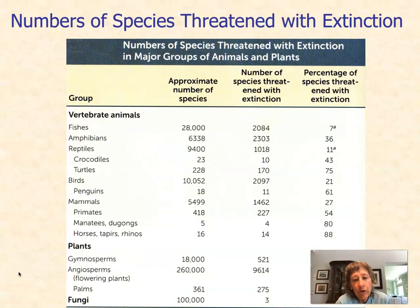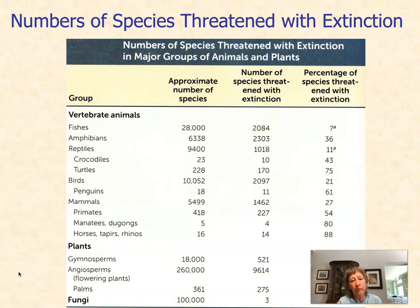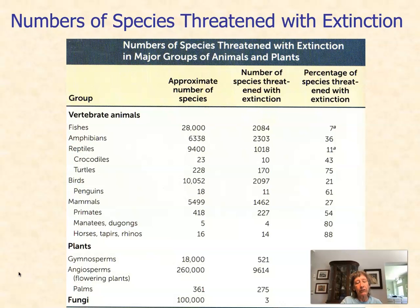If you look at the number of species threatened with extinction today: 27% of mammal species are threatened with extinction. Among primates — and humans are primates — 54% are threatened with extinction today. Looking at birds, specifically penguins, 61% of penguins are threatened with extinction today. So we are living right now during the sixth mass extinction, an extinction that is human-caused.